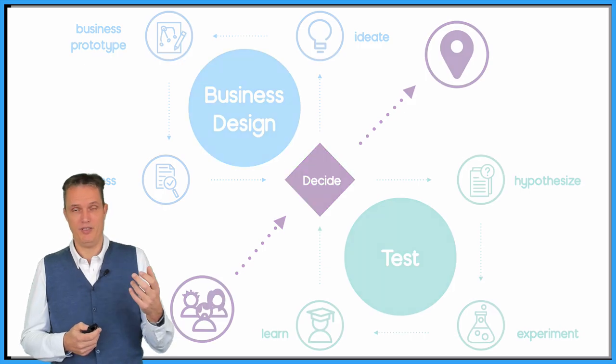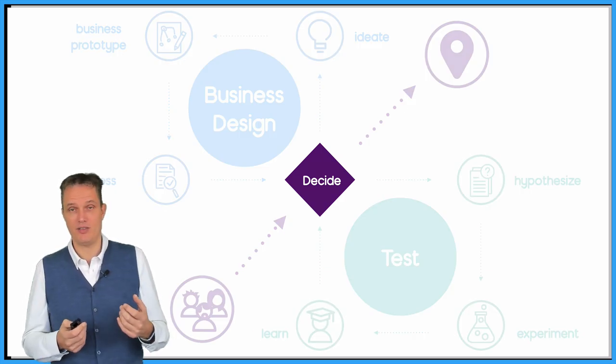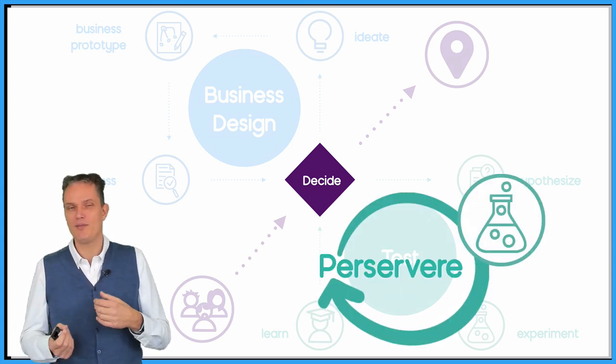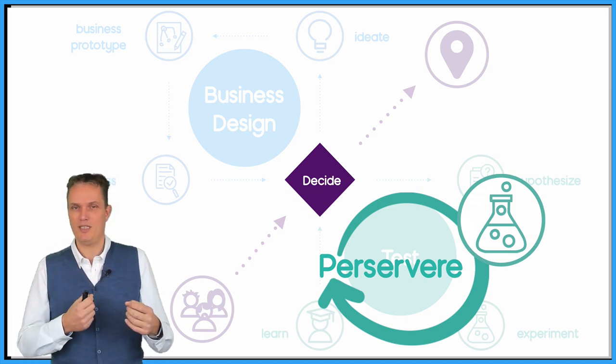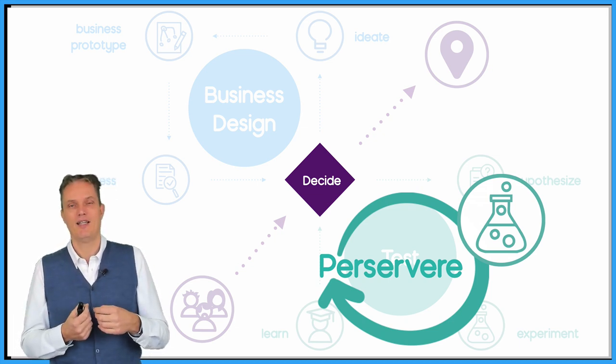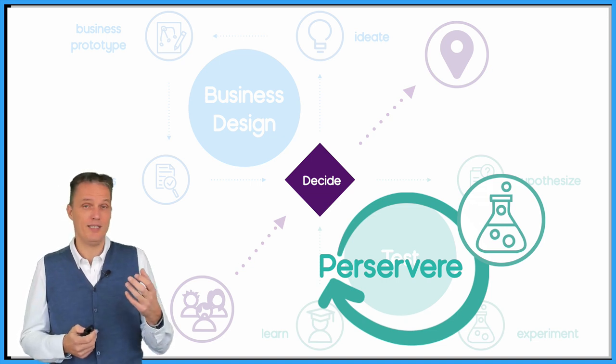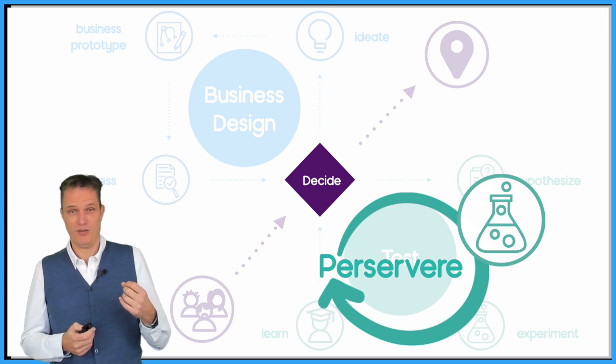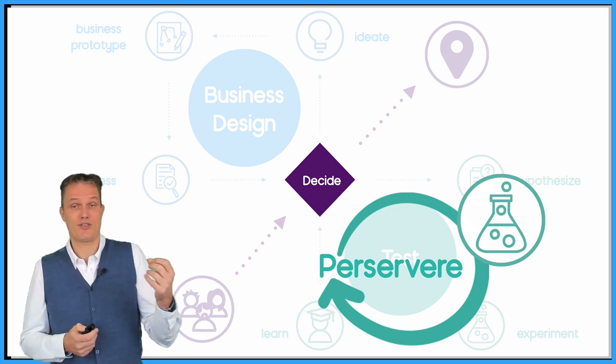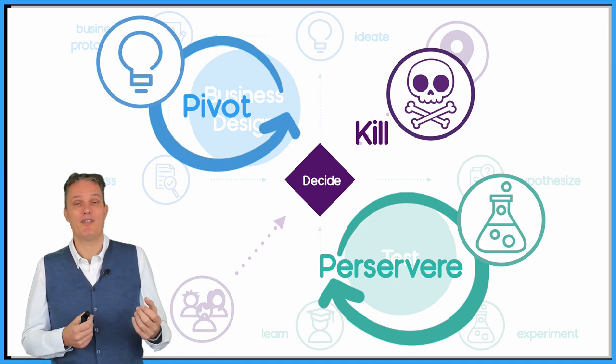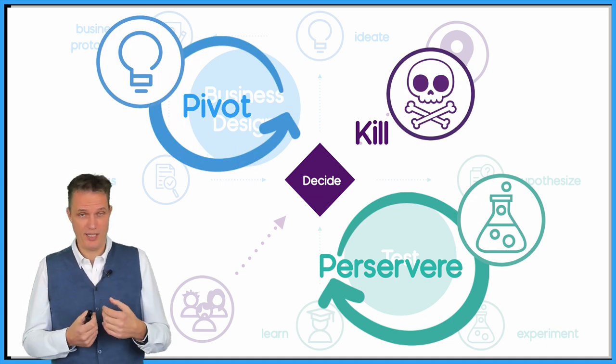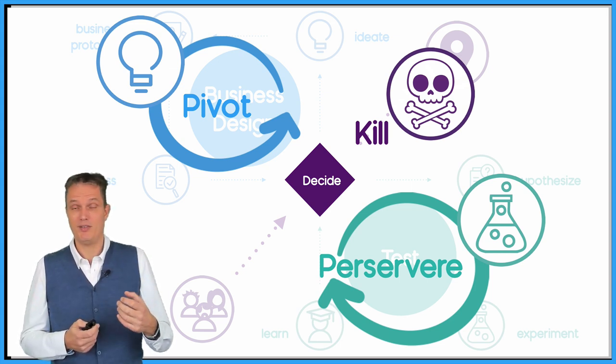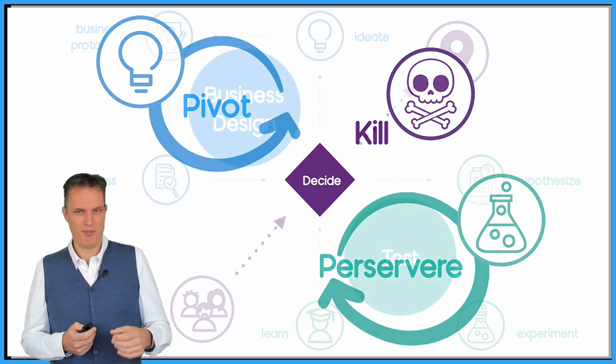And then you can come to the next phase which is all about a decision you need to make. The decision could be we need more data. We need to run more experiments. We have to persevere because we don't have enough data for our assumptions. It could also be that you have got enough data but that you cannot make business out of it, or that is not a problem for a customer, that is not solving a problem. So then you need to pivot. And the last thing could be to kill it. Kill it as early as possible. And if it's successful and it's data-driven successful then of course you can make business of it.